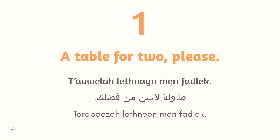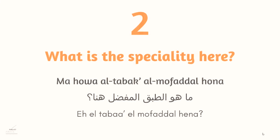Phrase one: طاولة لثنين من فضلك — 'a table for two please.' Here, طاولة means table, ثنين means two, and من فضلك means please. In Egyptian Arabic we say طربيزة instead of طاولة, and اثنين instead of ثنين, so it becomes: طربيزة لاثنين من فضلك.